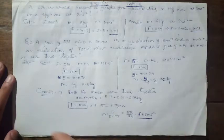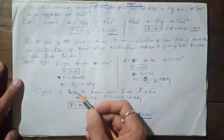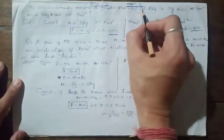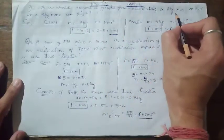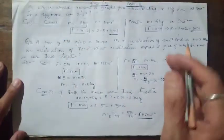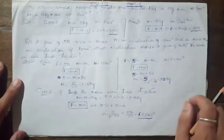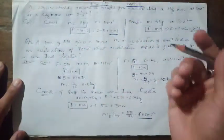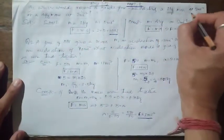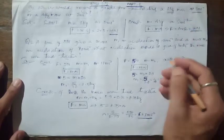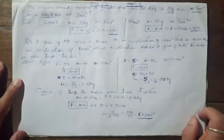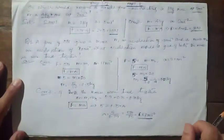we'll discuss some numerical problems. The first problem asks: which requires a greater force — accelerating a 2 kg mass at 5 m/s², or a 4 kg mass at 2 m/s²? We have to calculate the force in each case to determine which one requires greater force.